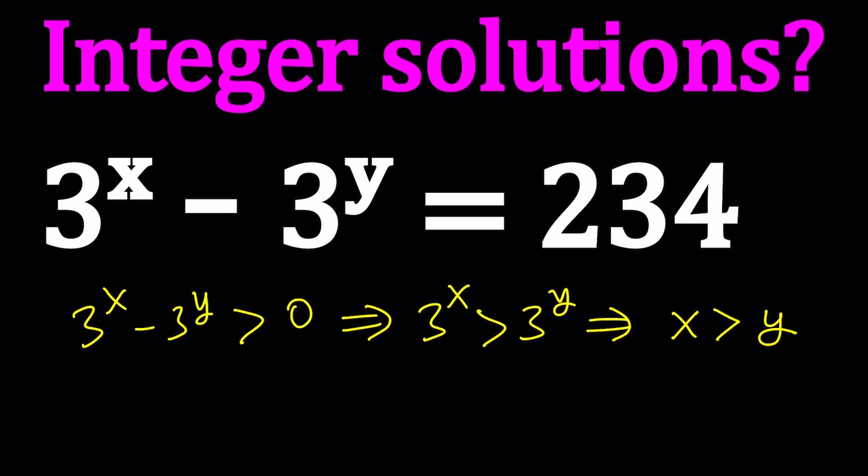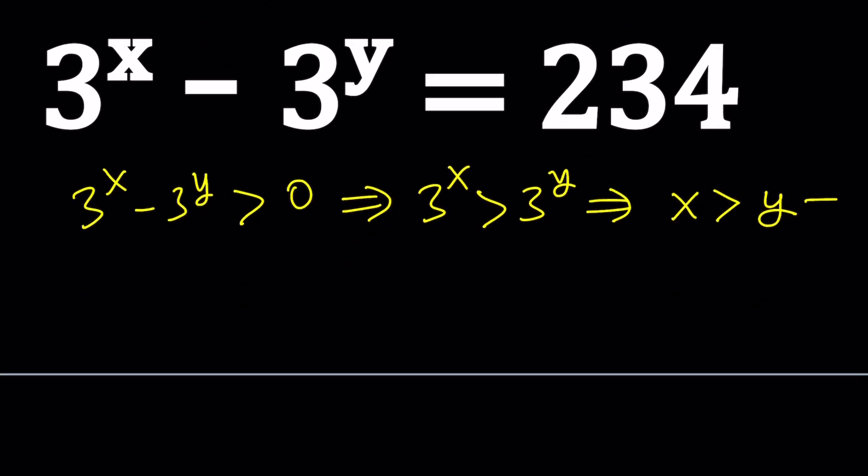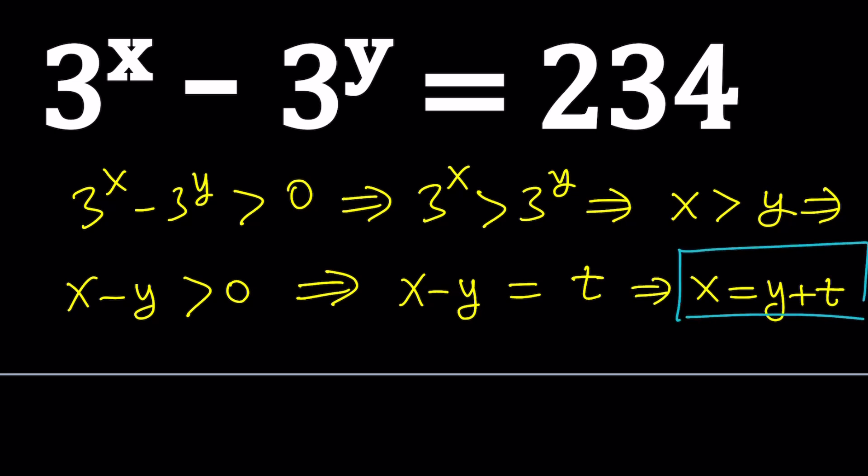Now, since x is greater than y, this implies that x minus y is greater than 0. And since x minus y is greater than 0, I'm going to go ahead and set x minus y equal to t. Since x and y are integers, t is also a positive integer. From here, we can get x as y plus t. And that's actually what we are going to use in our equation.